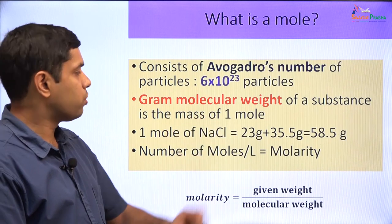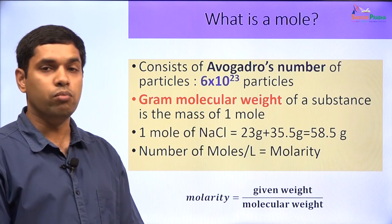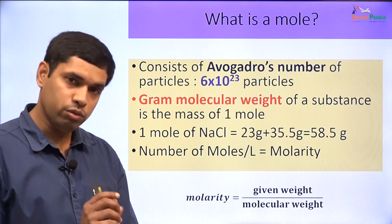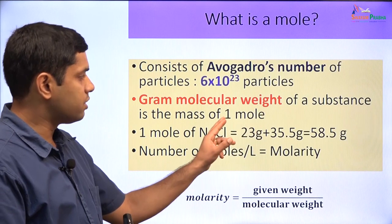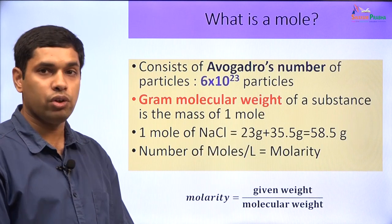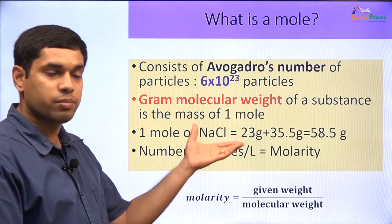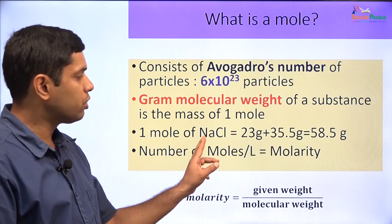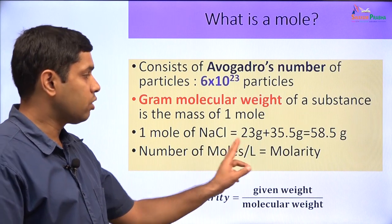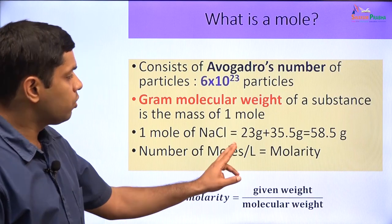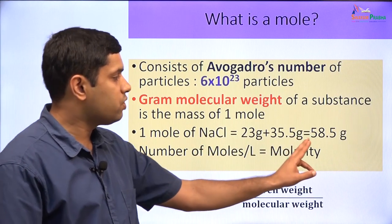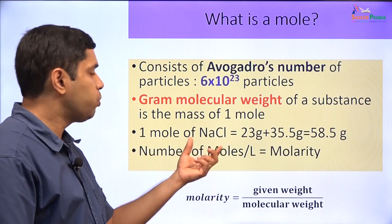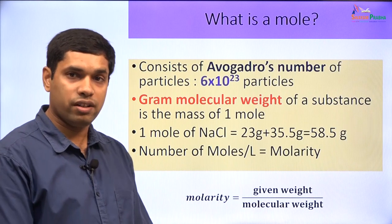The gram molecular weight of a substance is the mass of one mole. So if you look at the mass of a mole of a particular compound and you express that in grams, that will be the gram molecular weight. For example, if you take sodium chloride, the molecular weight of sodium is 23 and chloride is 35.5. So the molecular weight of NaCl will be 58.5, and if you take one mole of sodium chloride, it will have a weight of 58.5 grams.